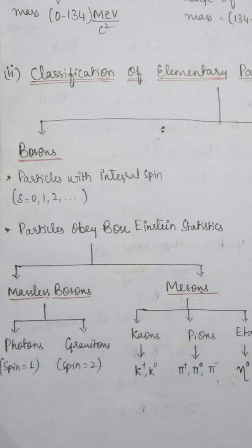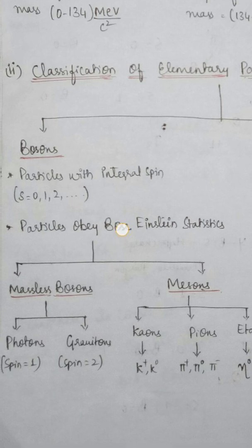Bosons follow Bose-Einstein statistical physics. They are divided into two sub-categories: massless bosons and massive bosons. Massless bosons include photons (spin = 1) and gravitons (spin = 2).